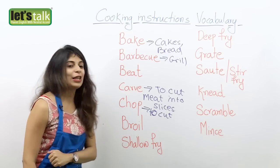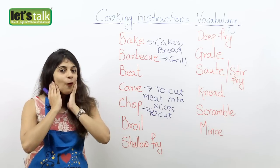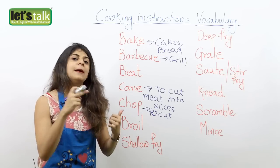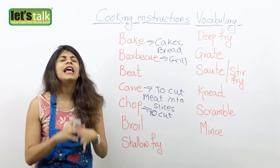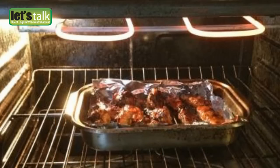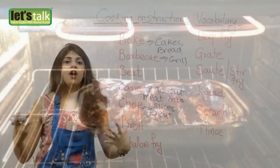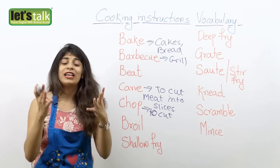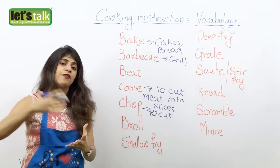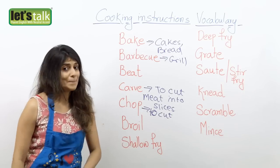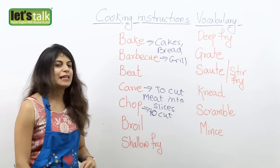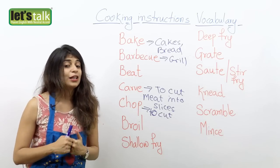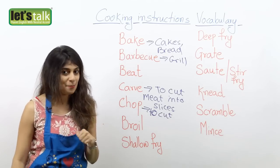Then another one is broil. Broil means you cook your food — probably meat or even veggies — on extremely high temperatures, and in fact you broil it for a very, very long time. So you heat it on extremely high temperatures for a very long time. So next time you are having broil chicken or broil chicken soup, you have to cook it on extremely high temperature.